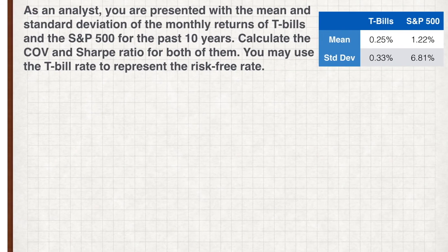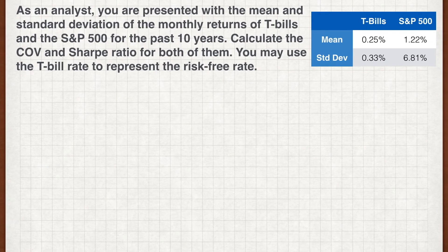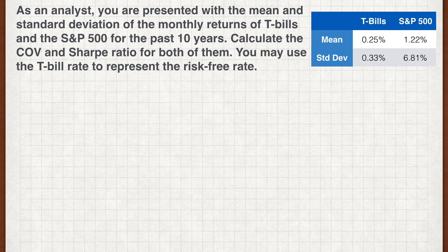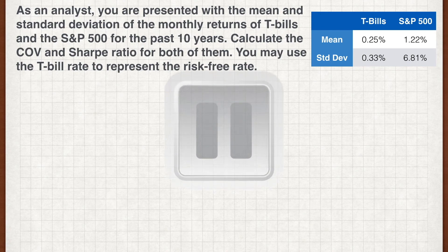Let's conclude this lesson with an exercise. As an analyst, you are presented with the mean and standard deviation of the monthly returns of T-bills and the S&P 500 for the past 10 years. Calculate the coefficient of variation and Sharpe ratio for both. You may use the T-bill rate to represent the risk-free rate. Pause the video now to work out the answers.